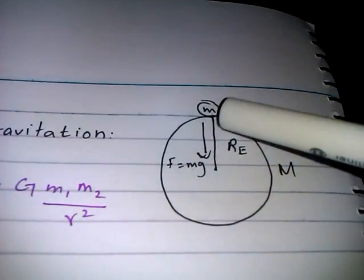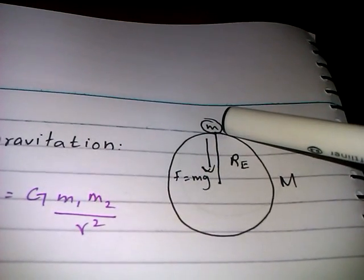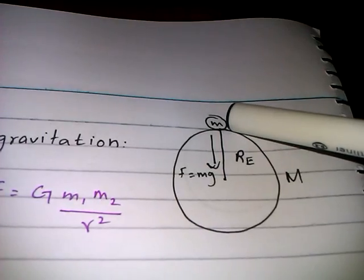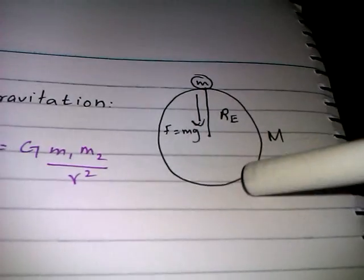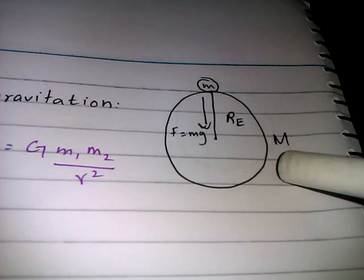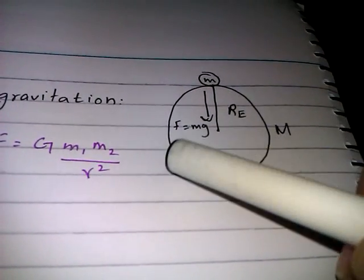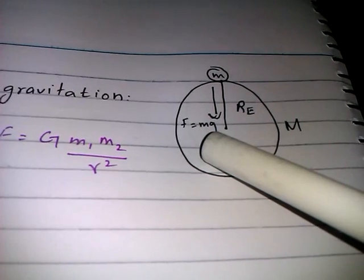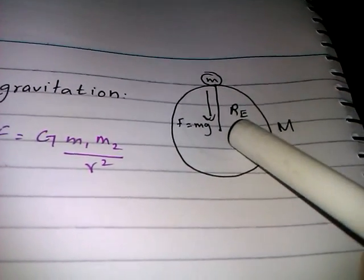Let's start with the diagram. Over here I have supposed that a mass M is placed on the surface of the Earth. The mass of the object is represented by small m and the mass of the Earth is represented by capital M. The weight of this body is acting downwards which is equal to F which is equal to mg. The distance between these two points is equal to the radius of the Earth, R.